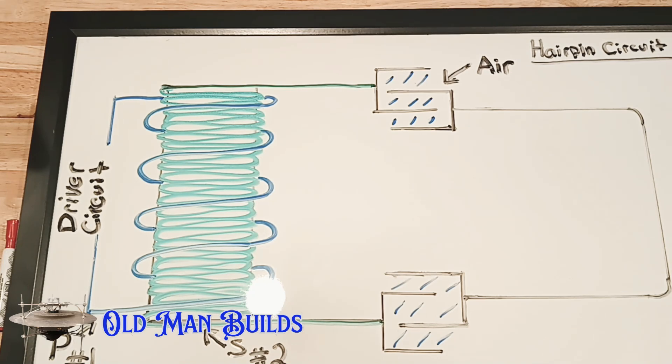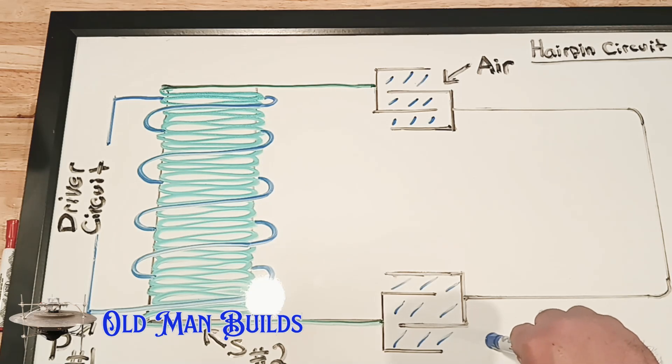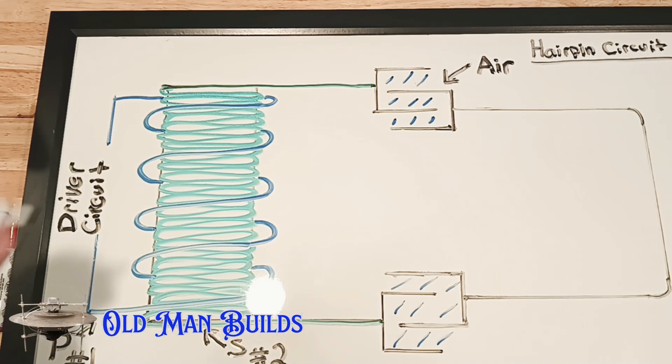If I take my number two coil and I create distance and capacitance in that distance in each way, now I have Tesla's hairpin circuit. This is the main part of his circuit. How do you do this without all this part? Well it's relatively simple, isn't it? If all I need is air in between here to create capacitance.